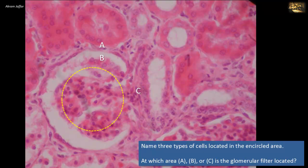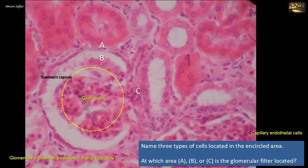The encircled area is the glomerulus, a rounded structure formed of a tuft of capillaries. The glomerulus is surrounded by Bowman's capsule, and together they are called the renal corpuscle. In the glomerulus you would expect to find capillary endothelial cells, mesangial cells of the supporting mesangium, and the third type of cells are the podocytes.